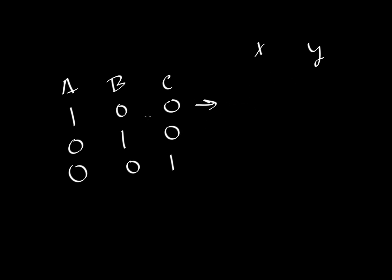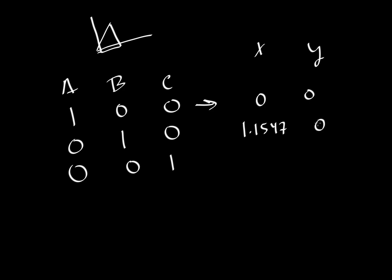Using the translation we showed earlier: for 100% A — the lower left part of the triangle — the coordinates are X = 0, Y = 0. For 100% B, that ends up at about 1.1547 on the X axis and 0 on the Y — B is at the bottom, so no vertical component. For 100% C, it would be 1 on the Y axis and 0.57735 on the X axis.